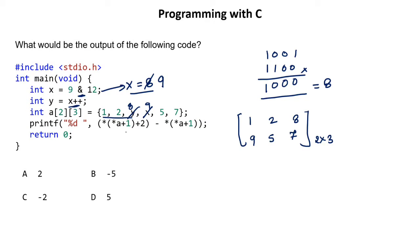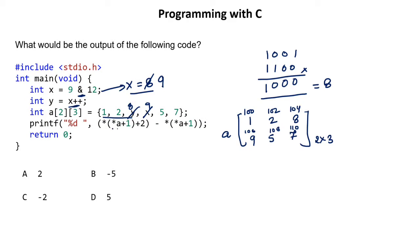Now let's work with the array using pointers — I recommend watching my video on 'pointers with array' for a full explanation. Here, 'a' is the name of the array. If the base address is 100, then with 2-byte integers the addresses go: 100, 102, 104, 106, 108, 110. Printing 'a' or '*a' both give 100, representing the first element's address.